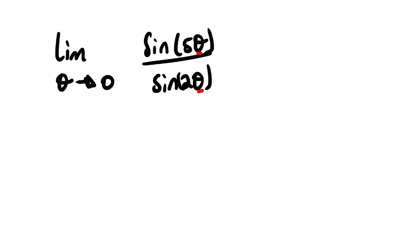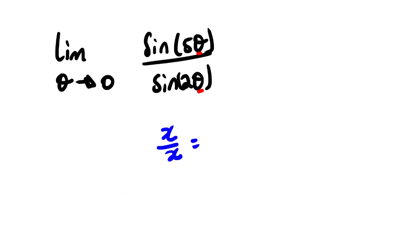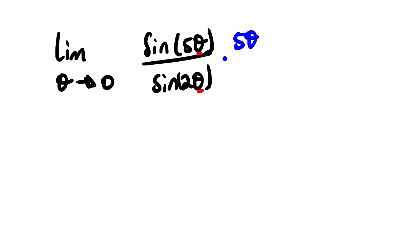Our first step is to multiply the function by one. We know that any term divided by itself equals one — for example, theta divided by theta equals one. So we'll multiply by one, expressed as five theta divided by five theta, and also by two theta divided by two theta, guided by the terms we see in the function.